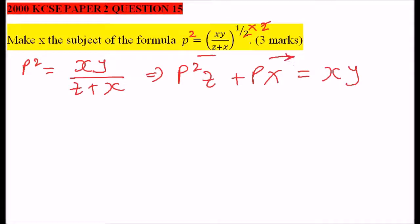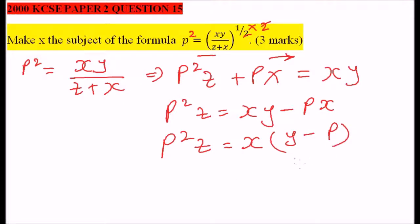Let's take px to the other side so that we have x on one side. Then we have p squared z equals xy minus px. We factor out x. So we have p squared z equals x times bracket y minus p. Then divide both sides by y minus p.